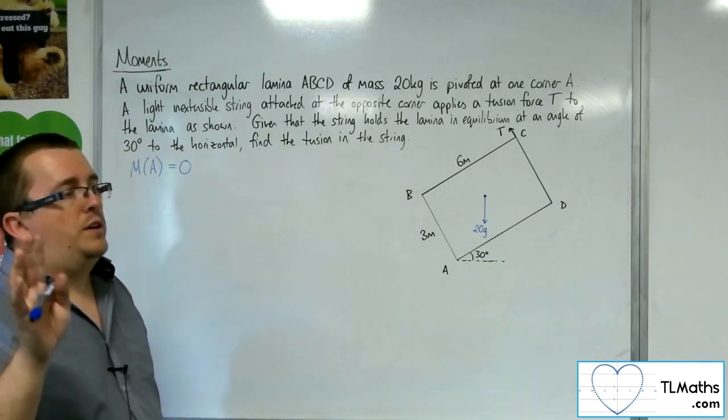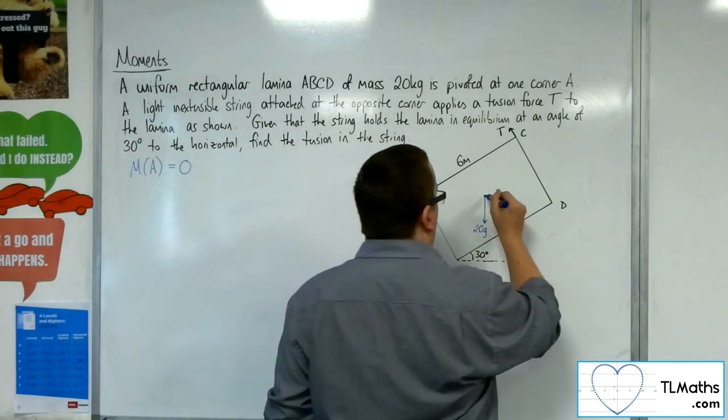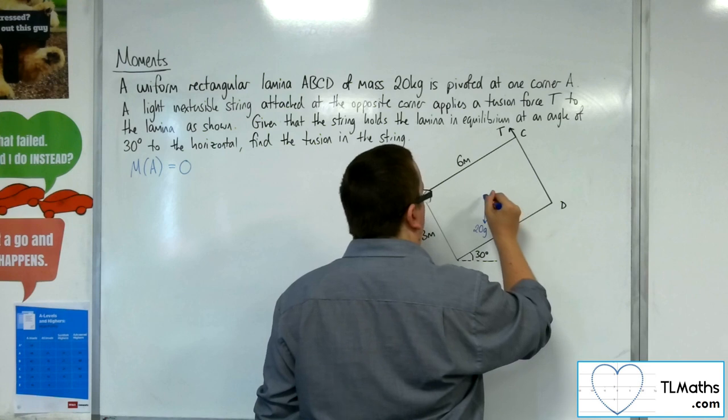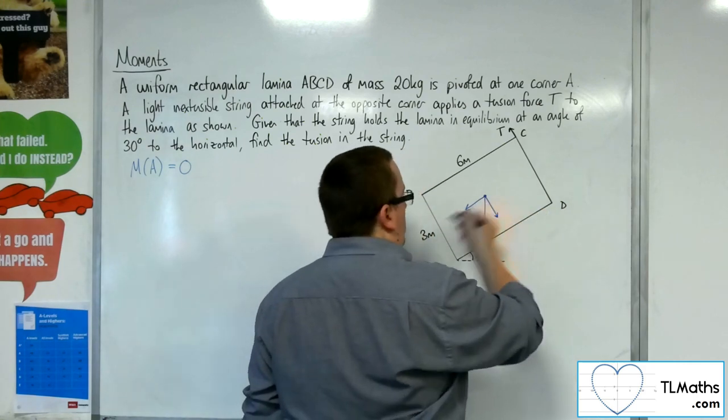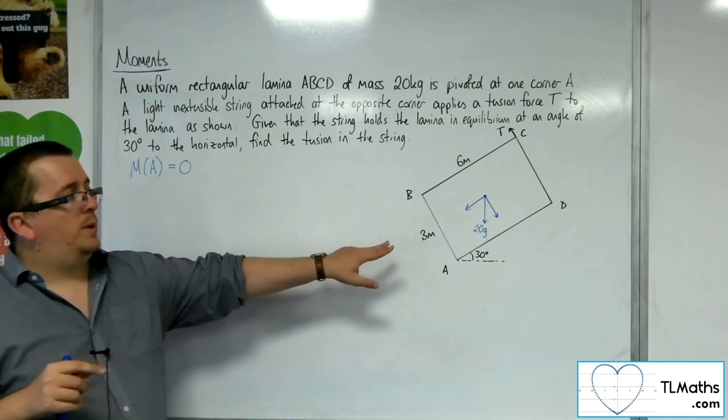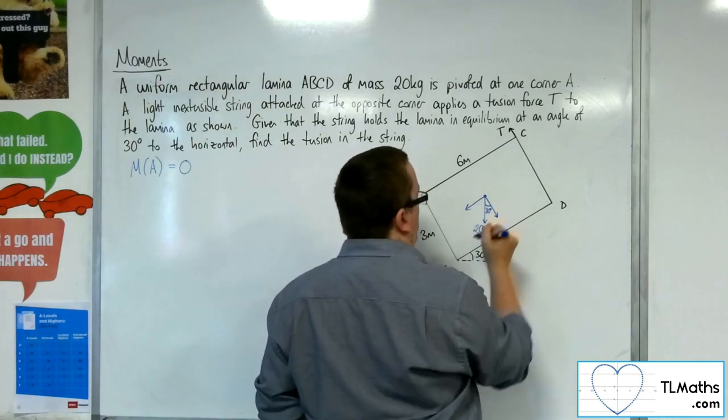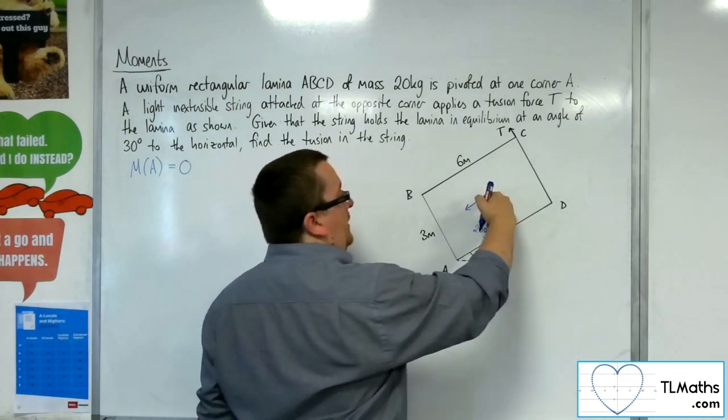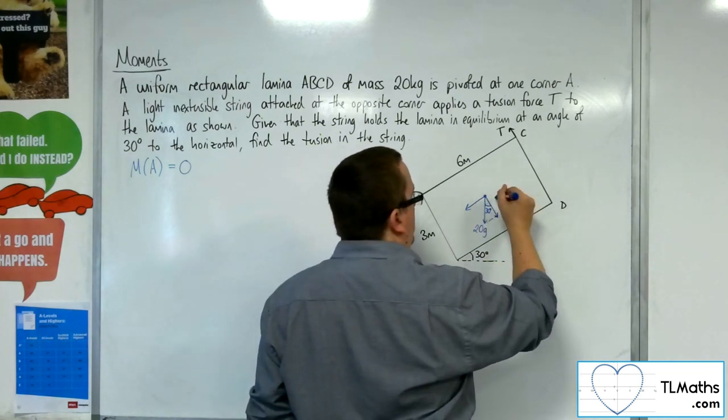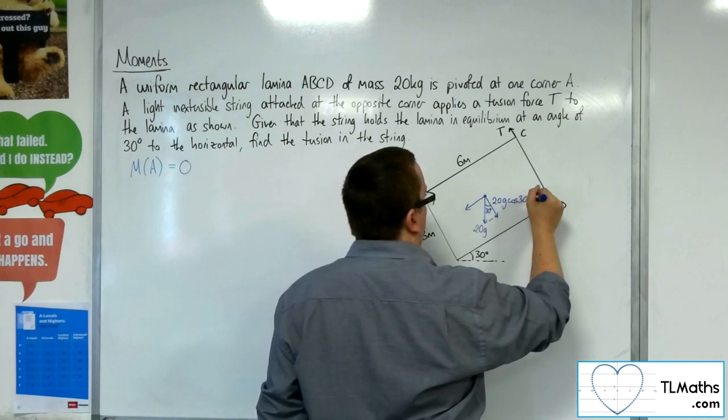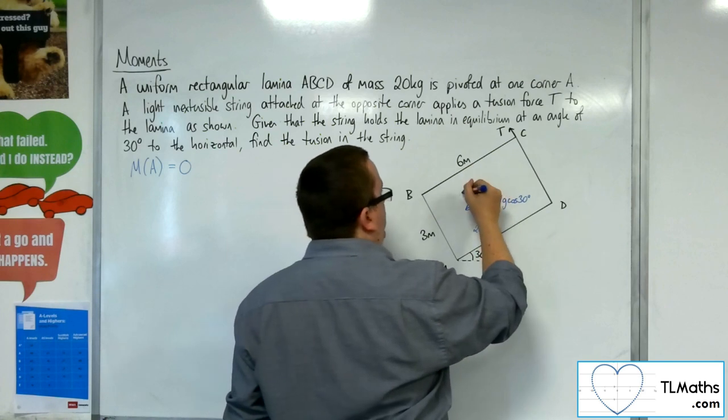So what we're going to do is we're going to divide this force, the weight force, up into two component parts. We're going to divide it up into two separate forces, one that is perpendicular to the plane and parallel to the plane. So rather than using the 20G as it stands, this angle here will be the same as that angle, so that's 30 degrees. So this side of this right-angled triangle will be 20G cosine 30. Now, this side is the same as that side there, which will be 20G sine 30.